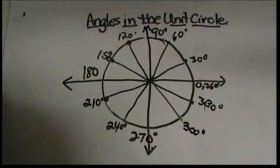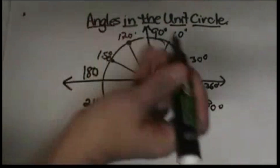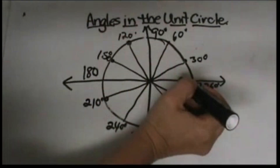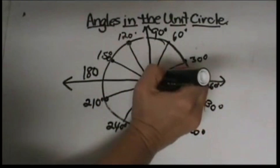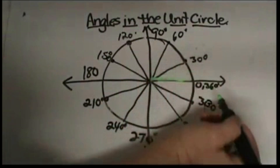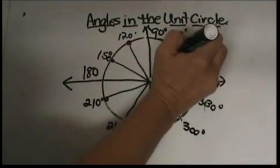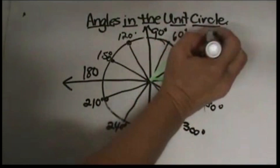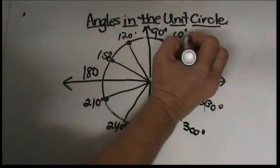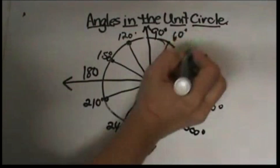Now I'm going to change colors to highlight the other group we're going to look at, and that is the 45-degree angle group. Starting at zero, we're going to go up 45 degrees, which is half of 90, and that's our 45-degree angle.